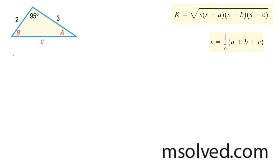So what we're going to do first, I'm going to write c squared is equal to 2 squared plus 3 squared minus 2 times 3 times 2 times the cosine of 95 degrees.